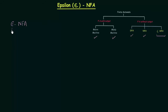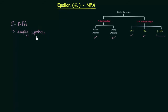What is this Epsilon? This symbol is called an Epsilon symbol, and Epsilon is used to represent empty symbols or null symbols. That means it is used to represent nothing.